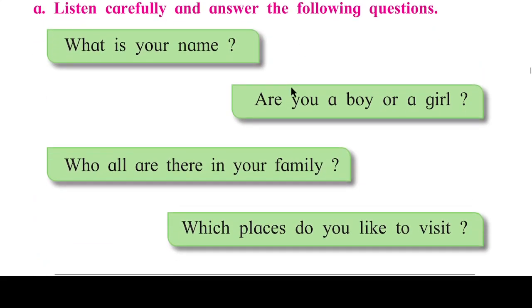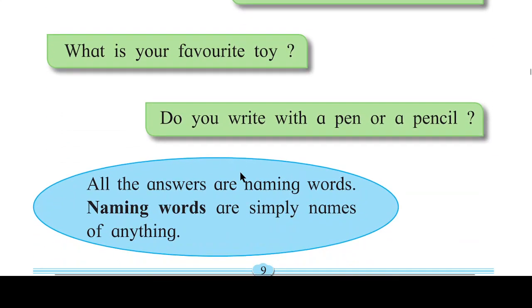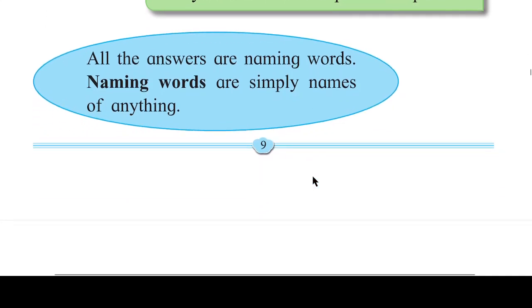All the answers are naming words. So angels, in these so many questions, the answers you get — they are all naming words. Naming words are simply names of anything. Naming words woh hote hain jo naam hote hain, chahe woh kisi ka bhi ho, kaisi bhi ho.